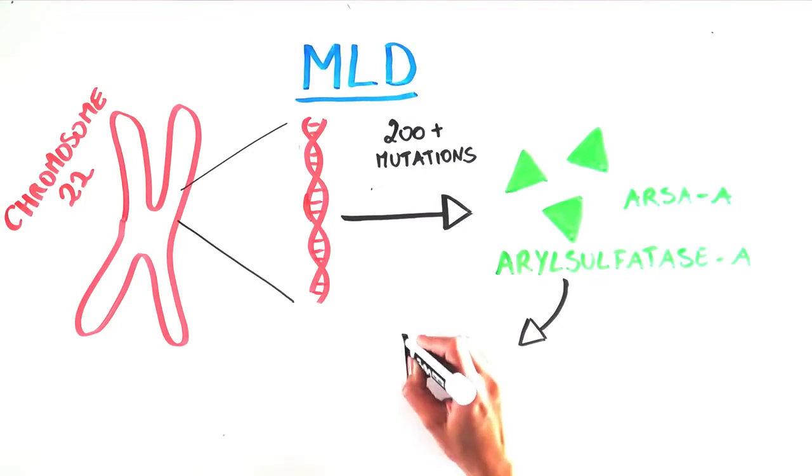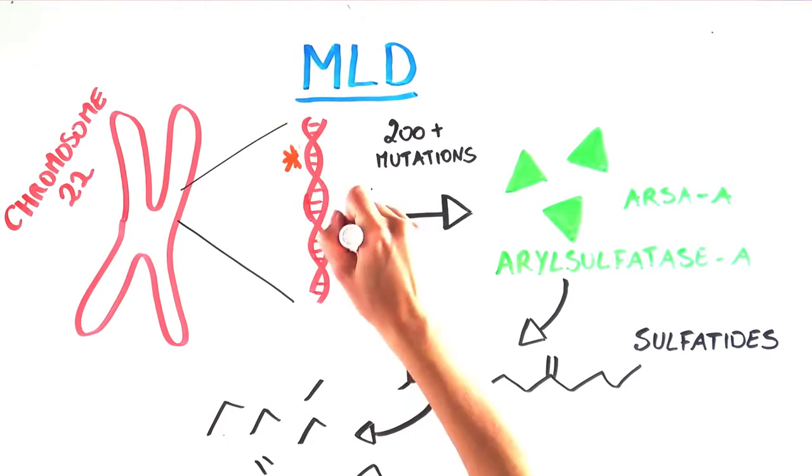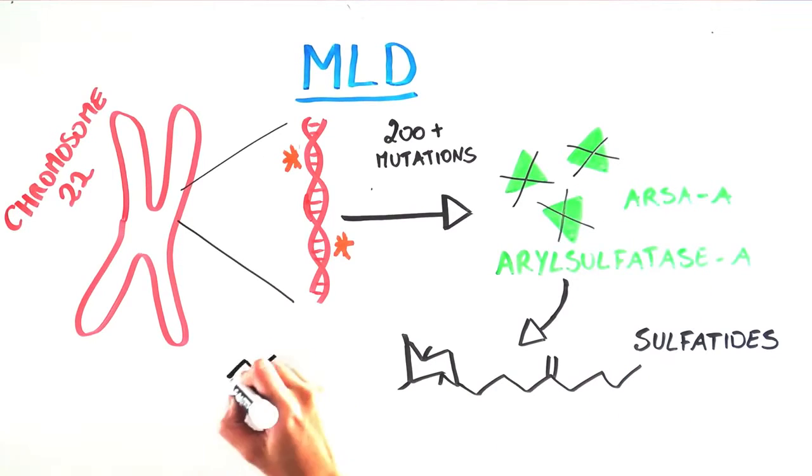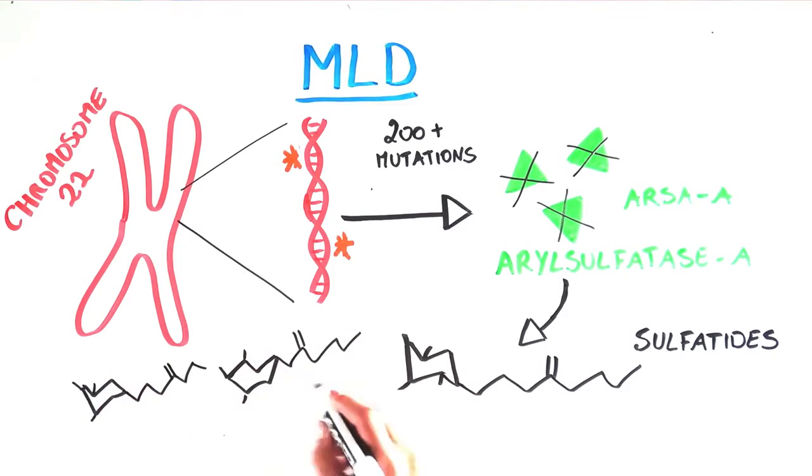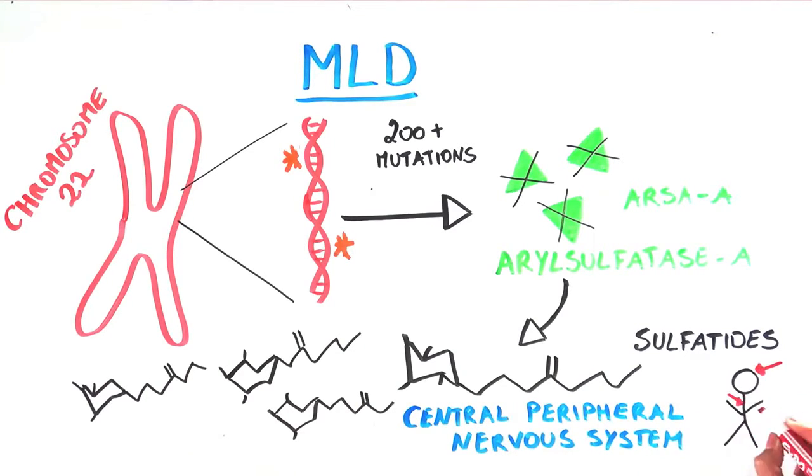This enzyme breaks down sulfatides, a normal byproduct of cell life. When ARSA-A is mutated, the sulfatides accumulate throughout the body, especially in the central and peripheral nervous systems, i.e. the brain, spinal cord, and nerves.